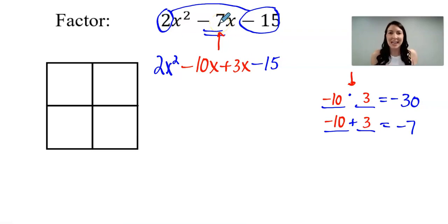Notice I have not changed the problem at all because negative 10x plus 3x does go back to negative 7x. It's very important that you're not changing the original problem. Now I'm going to move to the box. So the two numbers that I have in blue, the 2x squared and the negative 15, those two numbers are going to go here in the box.